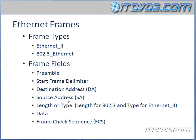We've seen Ethernet frames a little bit, but let's take a closer look at an Ethernet frame. There are two Ethernet frame types: Ethernet 2 or 802.3 Ethernet. By far, the more used frame type is going to be Ethernet 2, but we do need to know about 802.3 Ethernet frames.